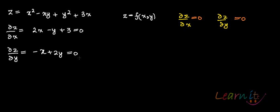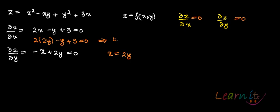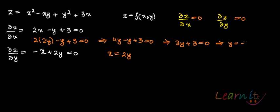From the second equation, x = 2y. Substituting into the first equation: 2(2y) − y + 3 = 0, which gives 4y − y + 3 = 0, so y = −1. With y = −1, substituting back: x = 2(−1) = −2.